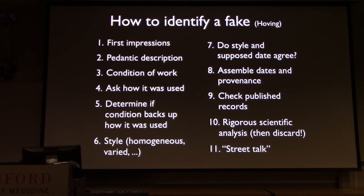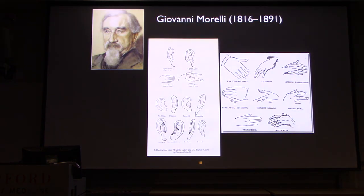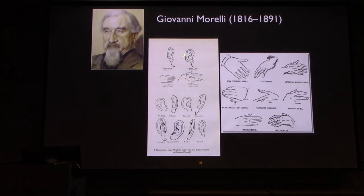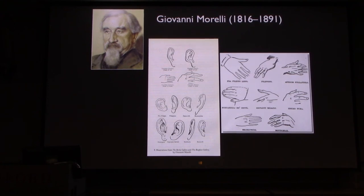Then there's street talk — what are people saying on the grapevine? One of the greatest founders of the field of scientific connoisseurship was Giovanni Morelli, who helped to identify artists by attributes of their work — how they painted fingers and hands and ears. He was actually trained as a medical doctor, and his training on how to look for diseases he then transferred over to diagnose and understand how artists work.